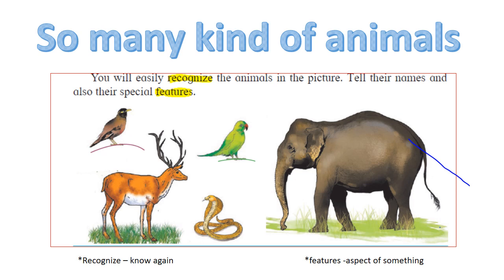Here, a few pictures of animals are given: Indian myna, parrot, deer, snake and elephant. You can easily understand these animals but there are special features. The elephant has a bulky body, four legs and a trunk. Birds like the Indian myna and parrot have two legs, two wings and a beak.